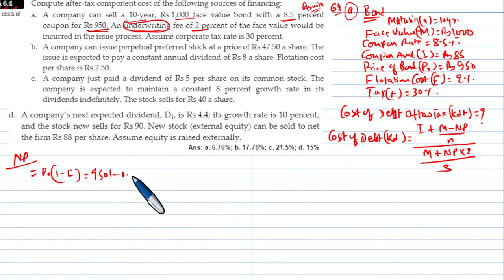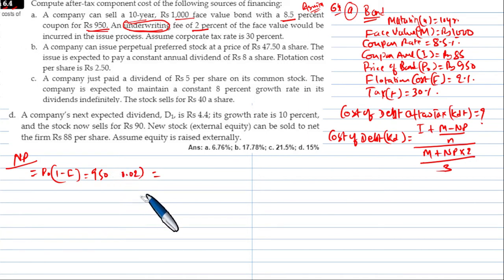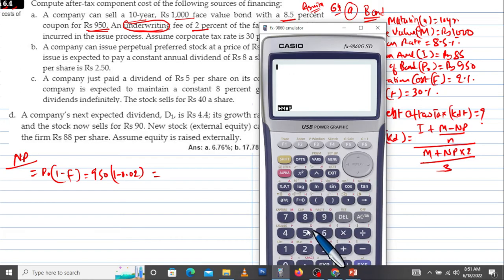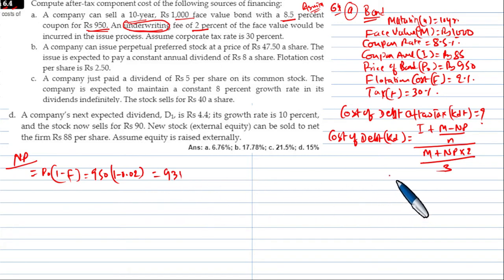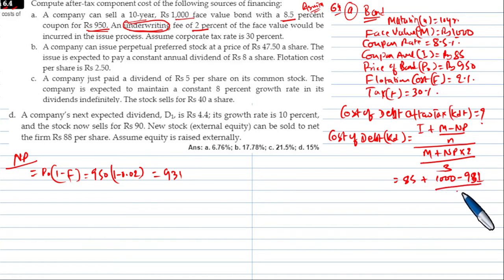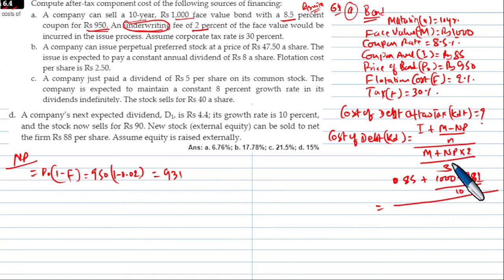Substituting values: flotation rate F is 1 minus 0.02. Net proceeds NP equals 1 minus 0.02 into 950, which gives 931. So the formula becomes: 85 plus (1,000 minus 931) divided by 10, all divided by (1,000 plus 931) divided by 2.